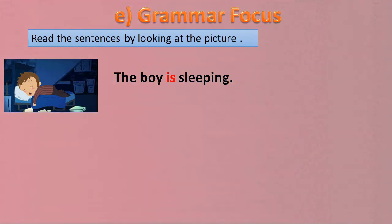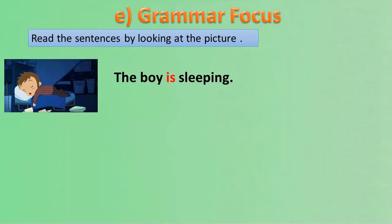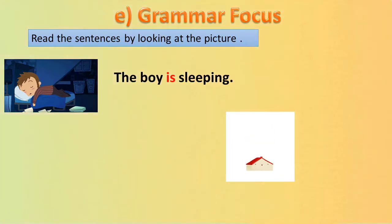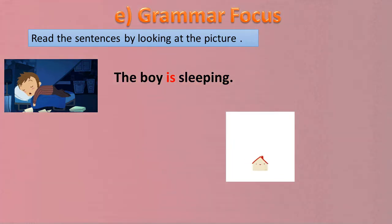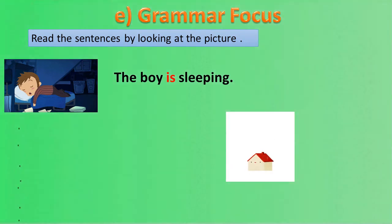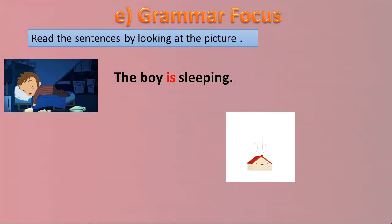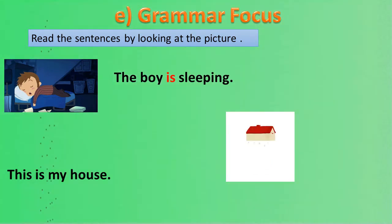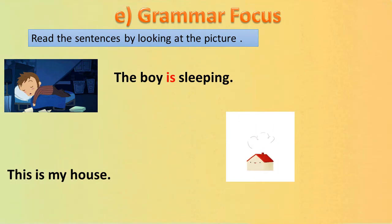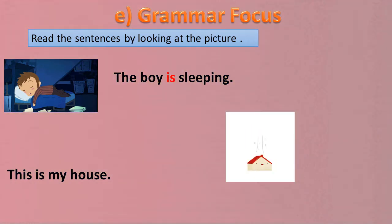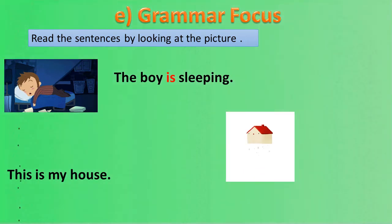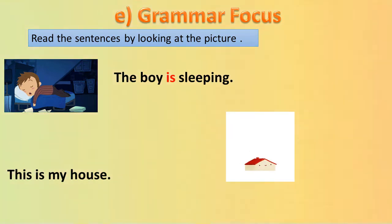Aur agar yahan ek se zyada boys hote to hum yahan 'are' ka istemal karte aur sentence thora sa change ho jata. Next picture: there is one house. More than one house? Yahan ek house hai to hum is ka sentence banayenge: This is my house. Yahan 'is' ka istemal kiya kyunke yahan pe ek house tha.